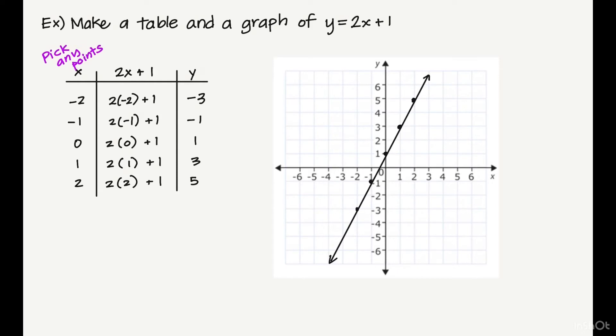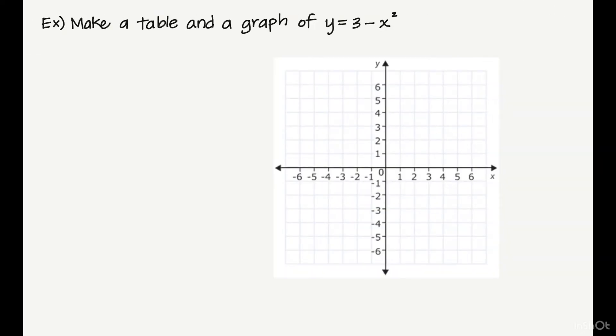Let's go ahead and do another one now. This time we're going to make a table and graph y equals 3 minus x squared. I'm going to draw my table with my x and my y, and then in the middle, I'm going to have my workspace of 3 minus x squared. Again, I'm going to pick those simple points: negative 2, negative 1, 0, 1, and 2. But you can pick whatever points you want.